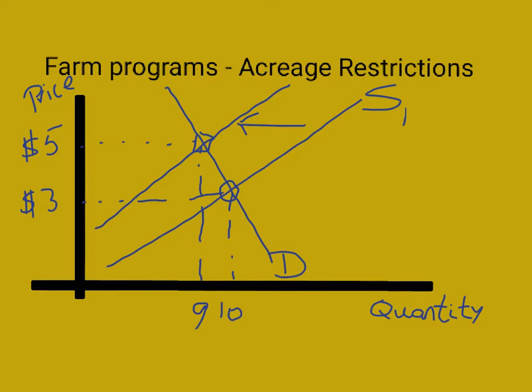If we attach numbers to these equilibrium points, we can see that the original equilibrium — $3 and quantity of 10 — would have each farmer earning 3 times 10, or $30 in revenue. And then the new equilibrium, where the supply is less at S2, we would have 5 times 9, so the total revenue there is $45. As you can see, it increased from $30 to $45.